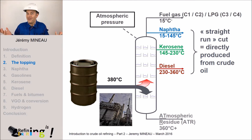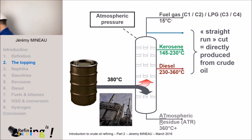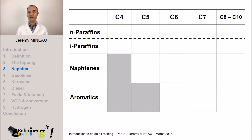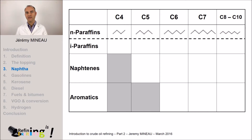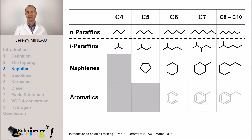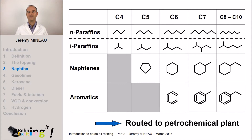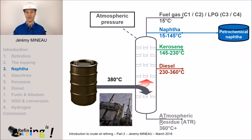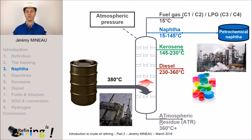So what are we going to do with this naphtha cut? Remember, the naphtha contains molecules with a number of carbon atoms ranging from 4 to 10. These molecules can be classified as N-paraffins, isoparaffins, but also naphthenes and aromatics. These molecules are routed to a petrochemical plant to produce intermediates necessary to manufacture plastics. This naphtha is called petrochemical naphtha, because it is routed to a petrochemical plant called the steam cracker.